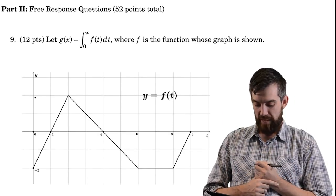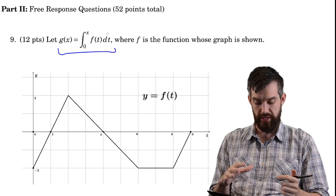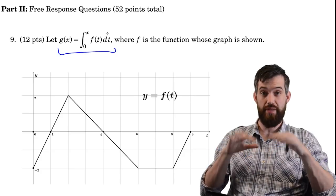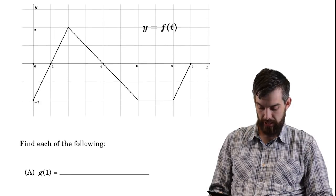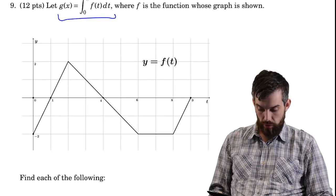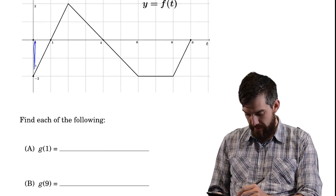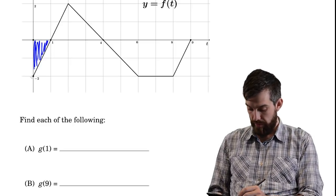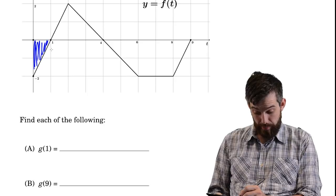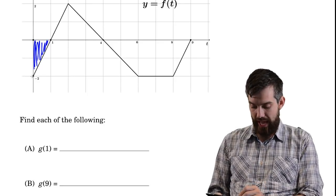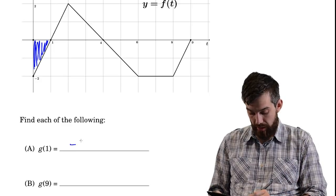Now on to the free response. This accumulation function problem has g(x) equal to the integral from 0 to x of f(t) dt, where the graph of f is given. First, find g(1), which is the integral from 0 to 1 of f dx. That's the area of the triangle with width 1 and height 2 — but it's below the x-axis, so the signed area is −1.